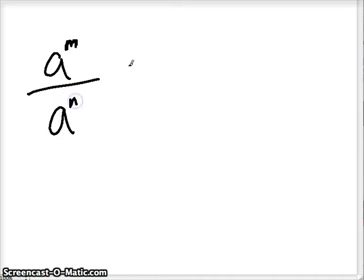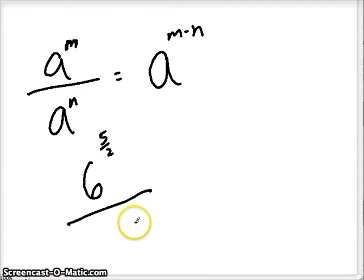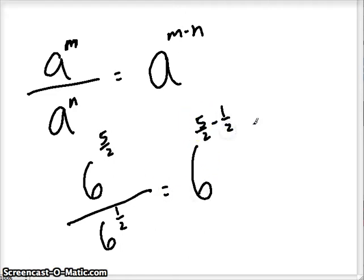Quotient property says that we could write this as one base and subtract our exponents. So, with some fractional exponents here, if I had 6 to the five-halves divided by 6 to the one-half, then I could say that's 6 to the five-halves minus one-half. As long as we're subtracting fractions, make sure the denominator is the same. And so, we'd get four-halves, which reduces to two, and 6 squared is 36.